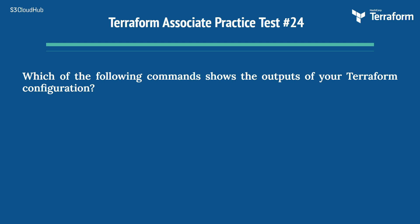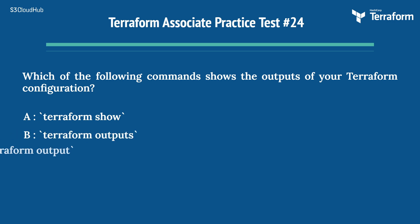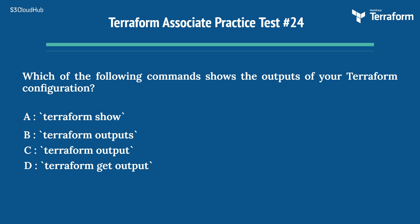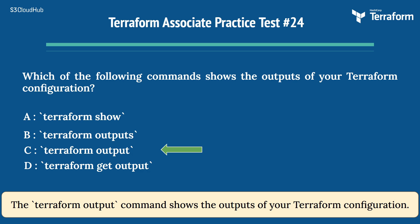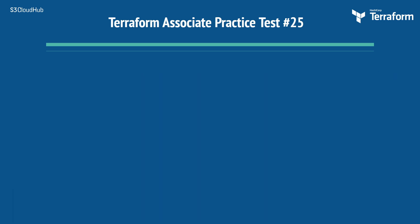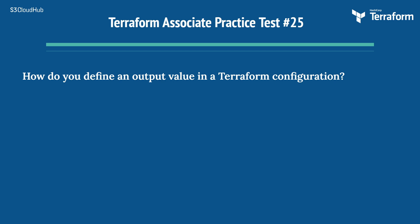The twenty-fourth question: which of the following commands shows the outputs of your Terraform configuration? Options are: A) terraform show, B) terraform outputs, C) terraform output, D) terraform get output. The right answer is Option C, terraform output. The terraform output command shows the outputs of your Terraform configuration.